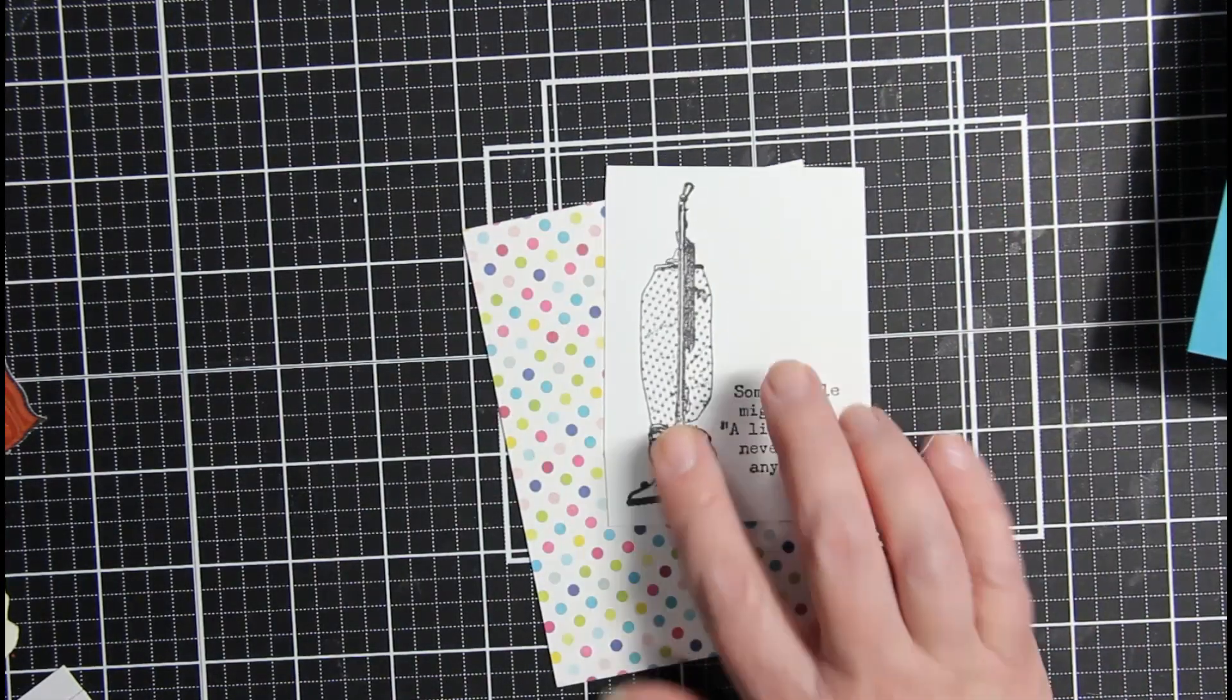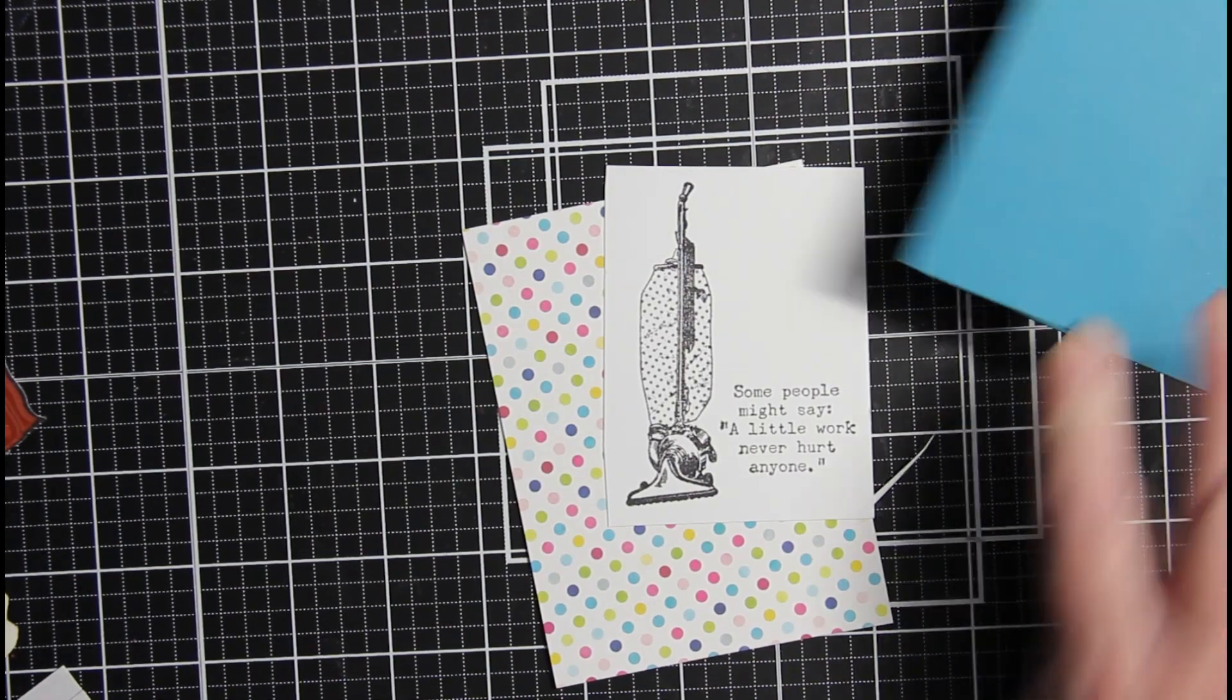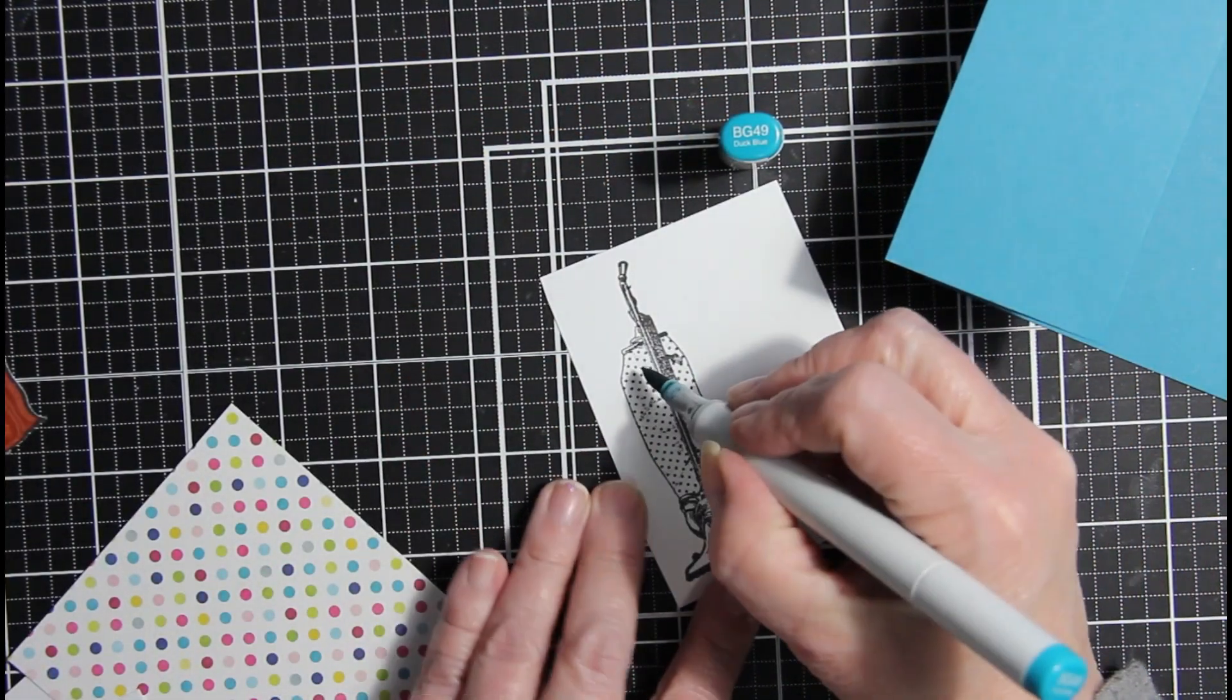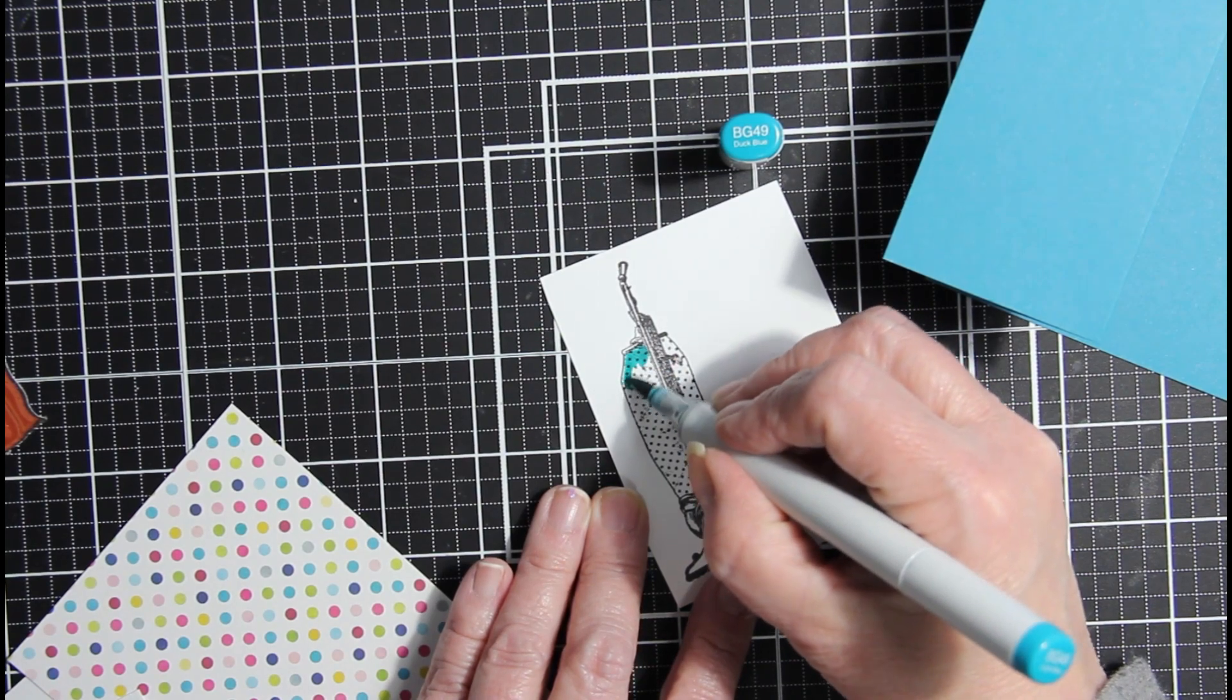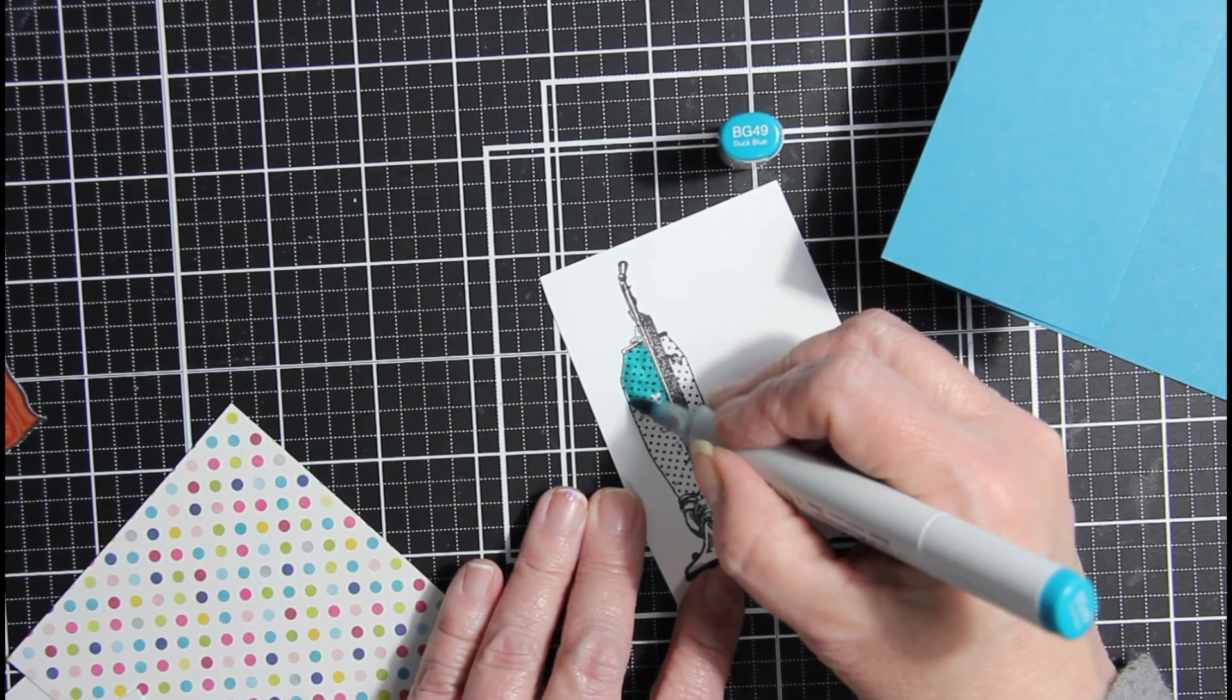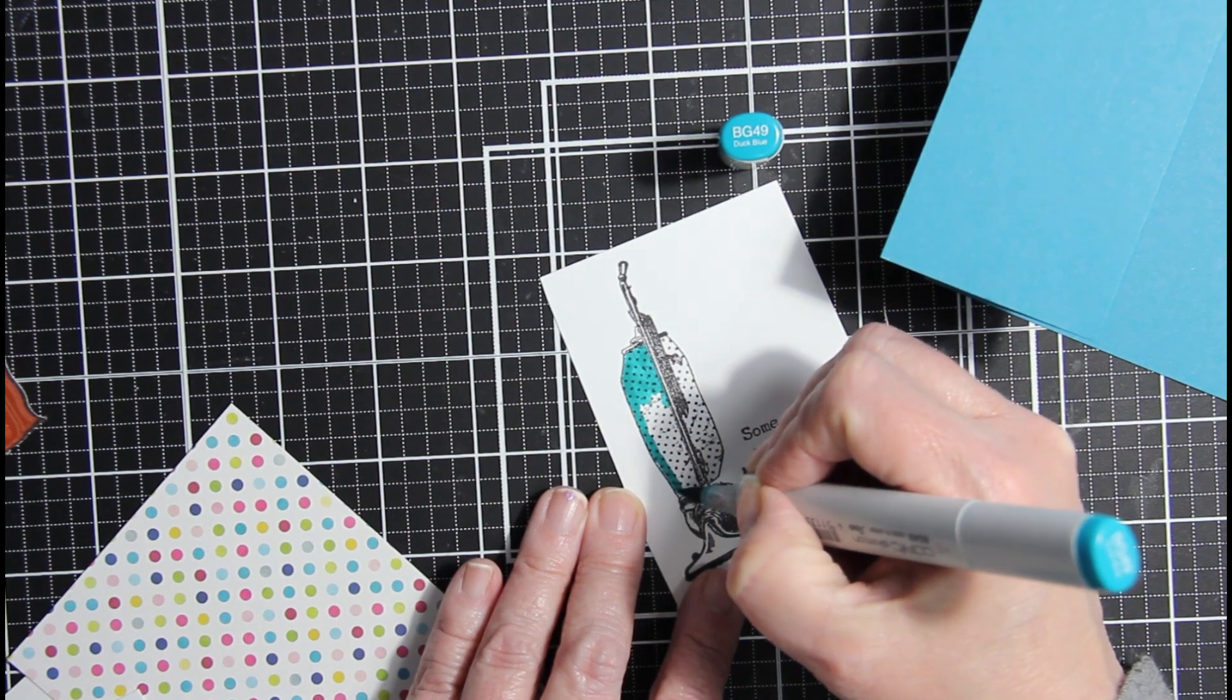Again, I want to pull from this color. I don't have something exact with Copic markers. But I do have BG49, which is pretty close. And I'm going to color this in. And I just want that one color. Again, you can choose whatever. But I just think that this is going to pull out not only my card stock, but the blue in the card.